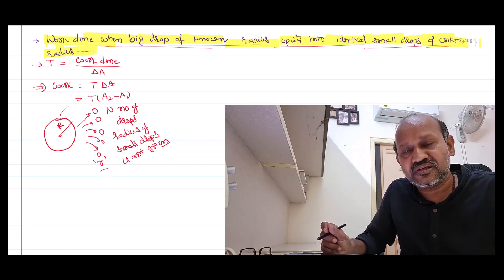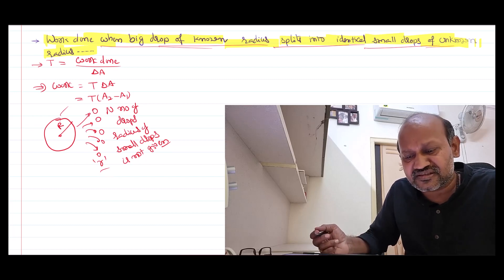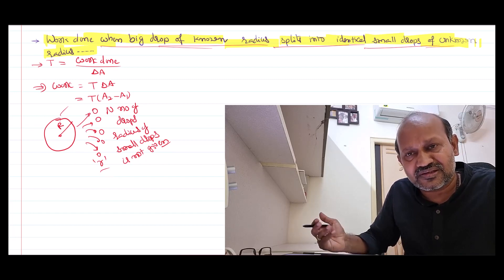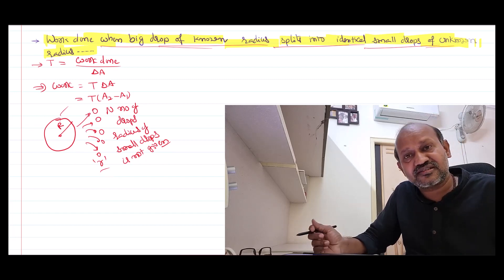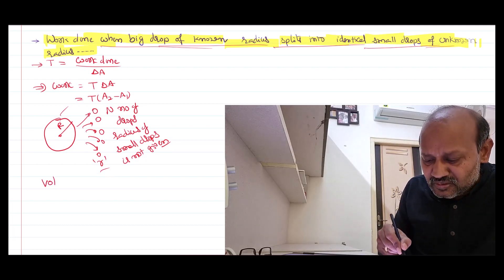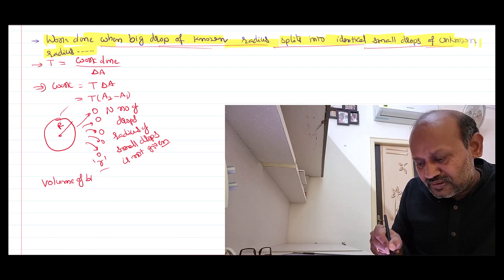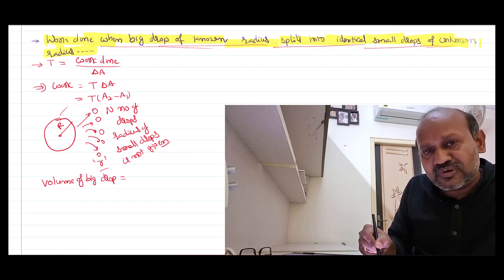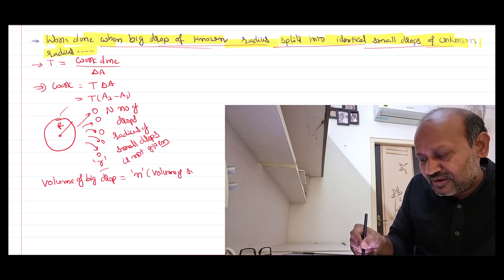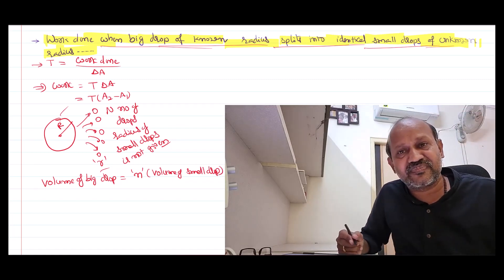So let's call the small drop radius 'r', which I don't know. I know capital R, the radius of the big drop. I shall express small r in terms of capital R. Since mass is conserved and density remains constant, the volume is also conserved. So the volume of the big drop equals the total volume of all small drops together. If n is the number of drops, then volume of big drop equals n times volume of each small drop.